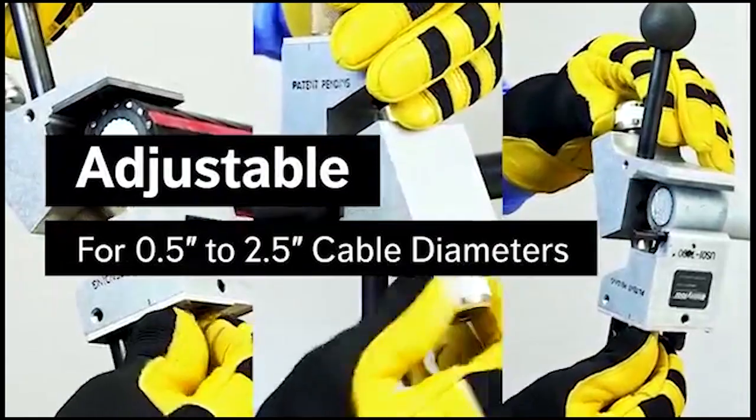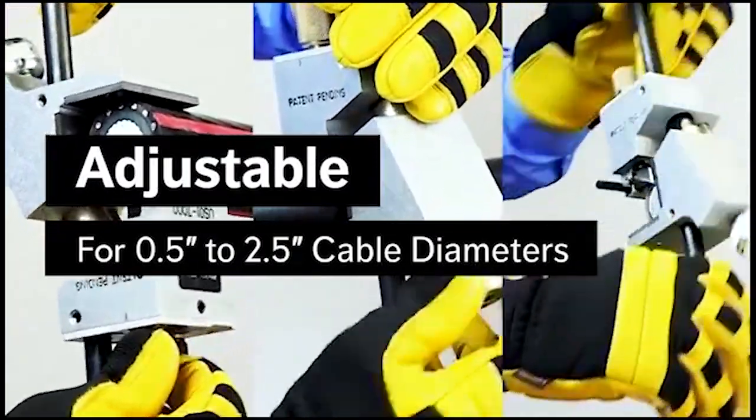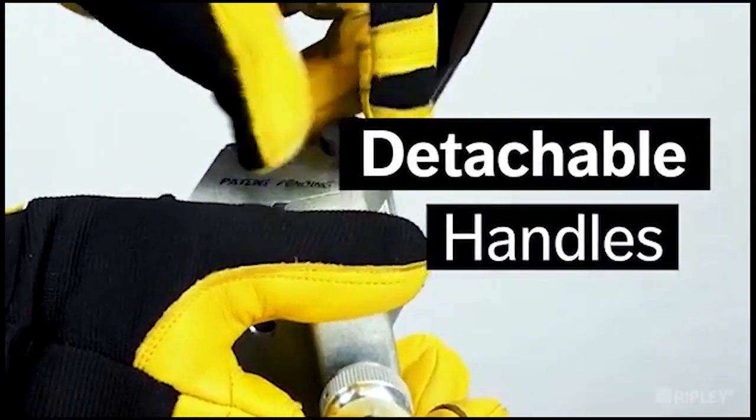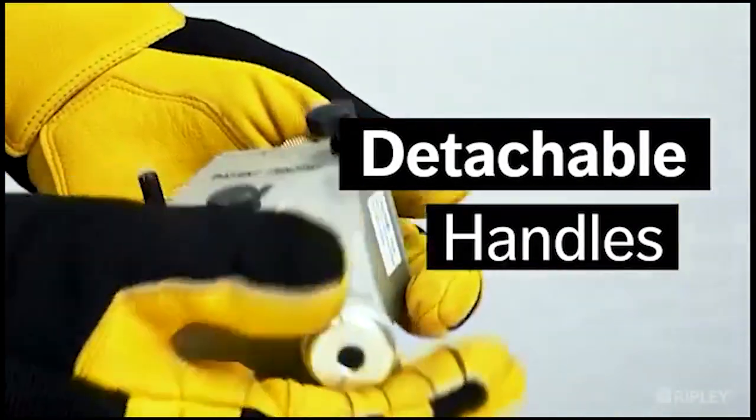The Infinity removes the jacket and insulation from cable ends, as well as insulation from the mid-span on overhead cables. Ergonomic handles provide leverage and easily detach in tight areas.